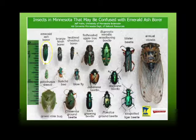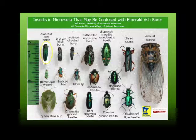Here's a picture of samples that are sent in — to Iowa State, DNR, and us — that people think might be emerald ash borer. The cicada does get sent in sometimes, and the six-spotted tiger beetle, which has a shiny color, also gets confused with emerald ash borer. But the real deal is the top left picture. That's emerald ash borer — you can see the size comparison to the other insects.